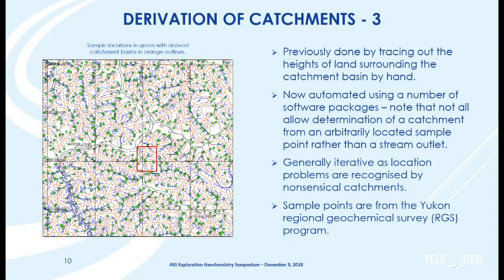Once you're satisfied that you've got your samples in the best locations you can devise, you generate a catchment for each one. This used to be done manually, tracing around the heights of land. Now there's automated software. Different packages have different pluses and minuses — one of the best commercially available is the hydrology module in Discover, working with MapInfo, because it actually generates the catchment for prescribed sample location points.